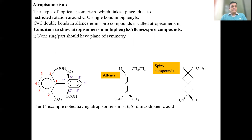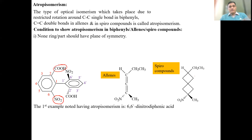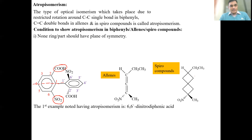The next main condition after rotation is restricted is: there should be no symmetry — no plane of symmetry — in any ring. This is possible only when the two different bulky groups introduced at the ortho positions of the same ring are different from each other. For example, if both groups were NO2 or both were COOH, rotation would be restricted and the rings would go perpendicular, but the molecule would still have a plane of symmetry. If one group is NO2 and the other is COH, then there is no plane of symmetry in that ring.